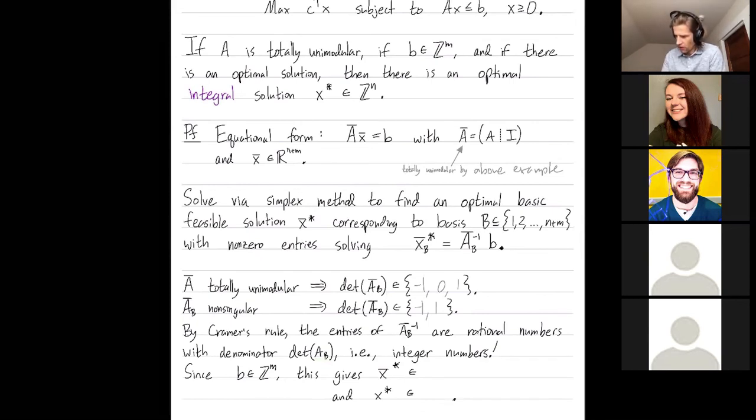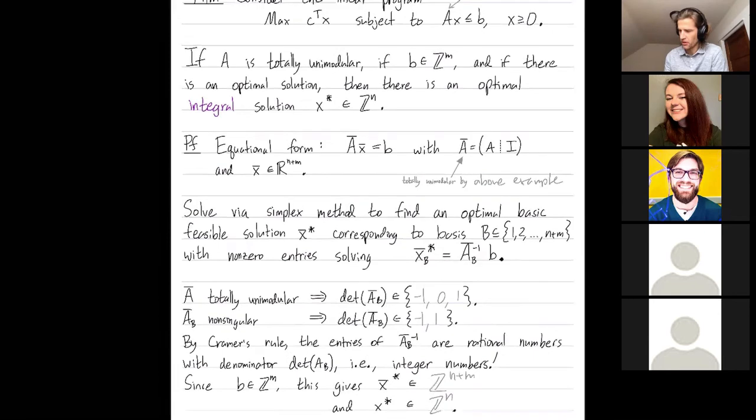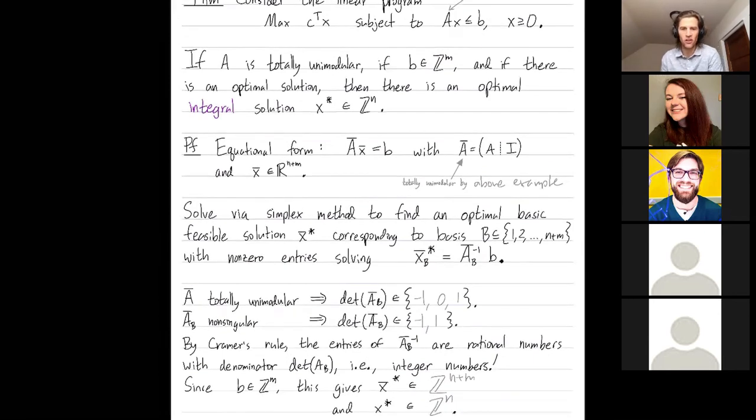So all of these entries are integers. By assumption, all of these entries in vector B are integers. And then when you multiply this integral matrix by an integral vector, you get an integral vector. So all of the entries of X bar star are integers. And then when I give it to the slack variables, all of the entries X solving my original problem way back up here are also integers.